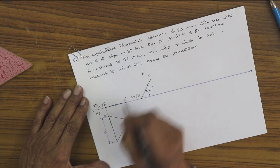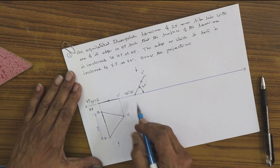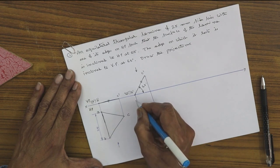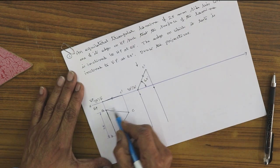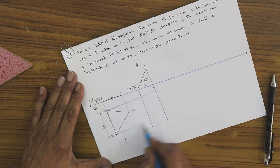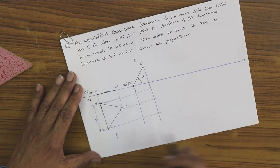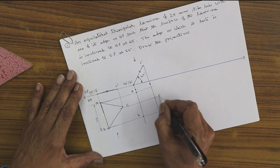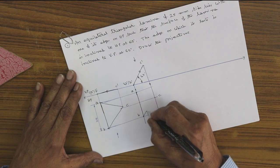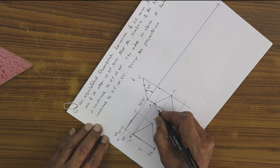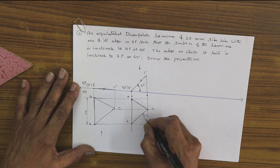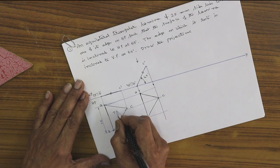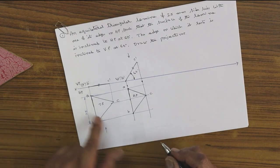Project now to get the new top view. When the surface is inclined to HP, draw the projectors from all the corners into HP, then draw the locus lines from the previous top view. The projected and locus lines intersect — A intersects A, B intersects B, C intersects C. Join them in order: A-B, B-C, C-A. We have an apparent triangle — the apparent top view, which is smaller than the true shape. The lamina is resting on HP with A-dash B-dash as the side; C-dash is the corner above HP, meaning AB is on HP.